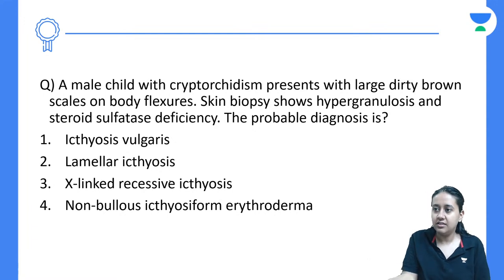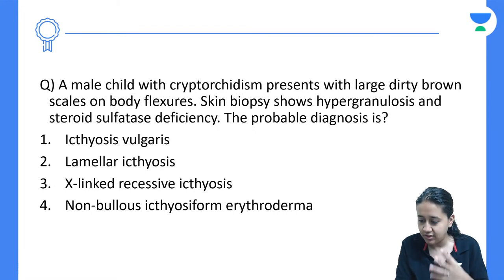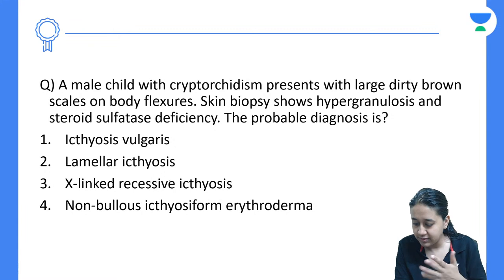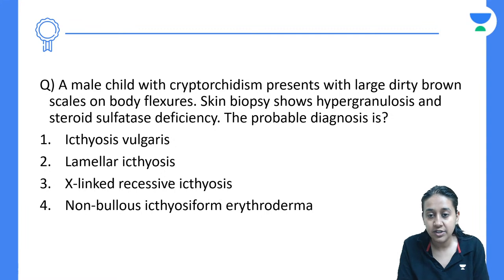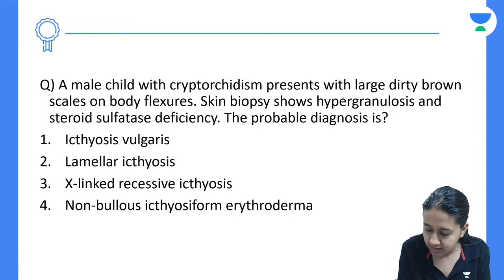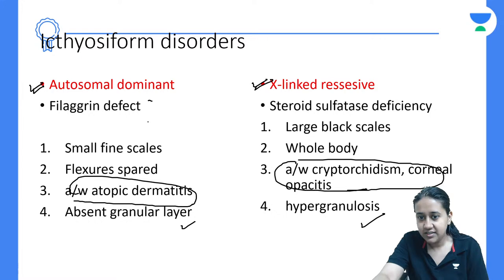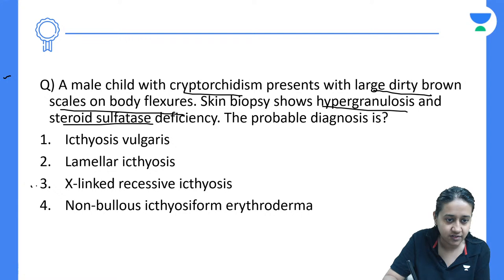Next question: a male child with cryptorchidism presents with large dirty brown scales; skin biopsy shows hypergranulosis and steroid sulfatase deficiency. What is the probable diagnosis? Steroid sulfatase deficiency, large dark scales, and cryptorchidism — all these point towards the diagnosis of X-linked ichthyosis.